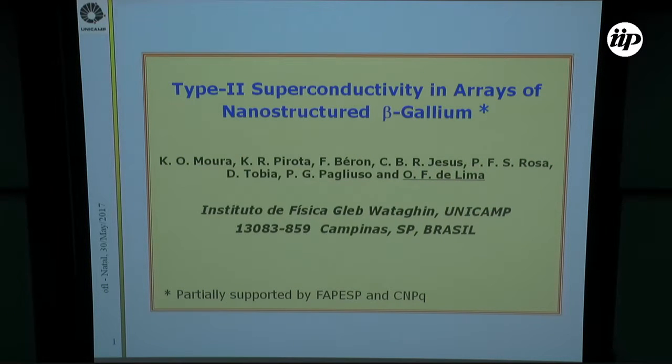I'd like to thank the organizers of this workshop, as well as the directors of this International Institute of Physics for hosting this meeting. I'm going to tell you about type-2 superconductivity observed in arrays of nanostructured beta-gallium. This is part of a PhD work done by Caroline Moura, and this project is partially supported by the Brazilian agencies FAPESP and CNPq.